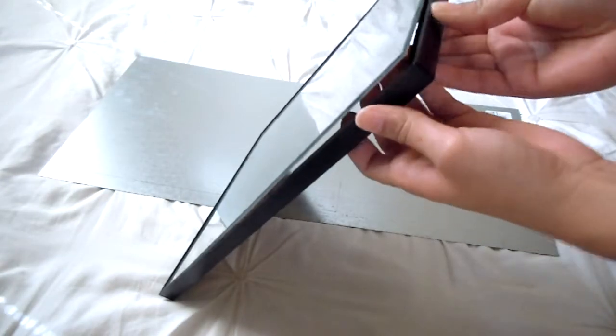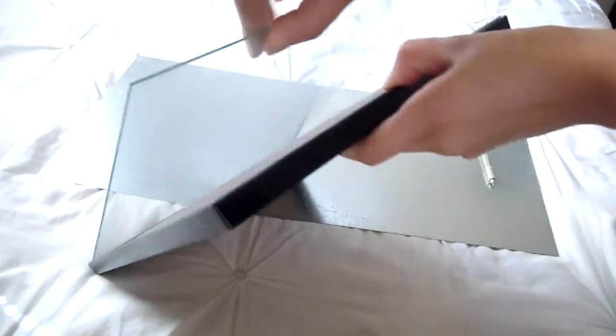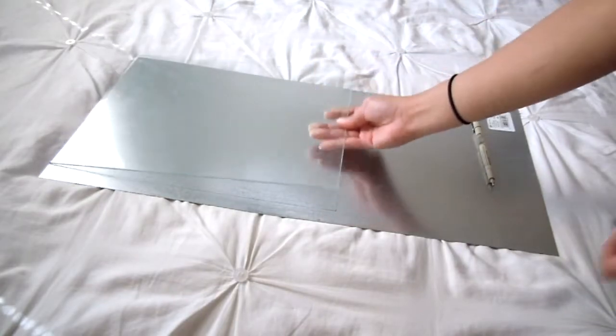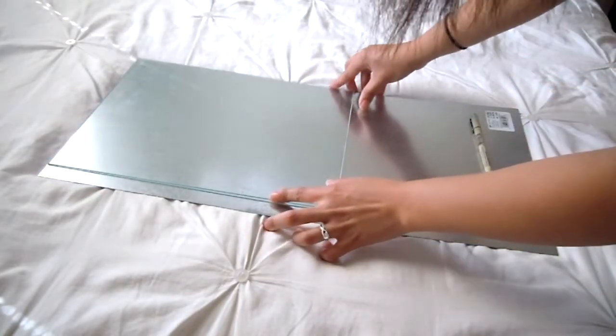First things first, you're going to take your picture frame and remove the glass. Then you're going to take the glass and place it on top of the sheet metal and trace around it using a pen.